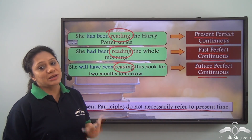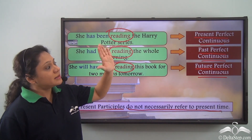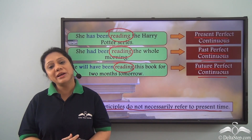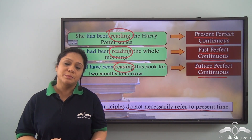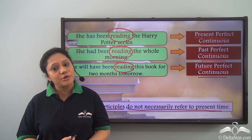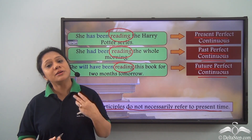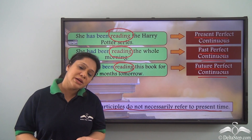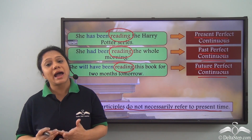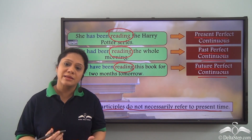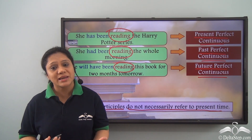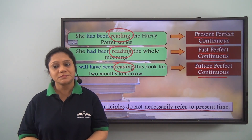Don't get confused by the name 'present participle' — they can show past, present, or future time. Today we learned about the present participle: the -ing form of verbs. They can be used as adjectives, to show an action in progress, or to show an action which happened immediately before another action. Practice identifying present participles in various exercises and you will soon master them.